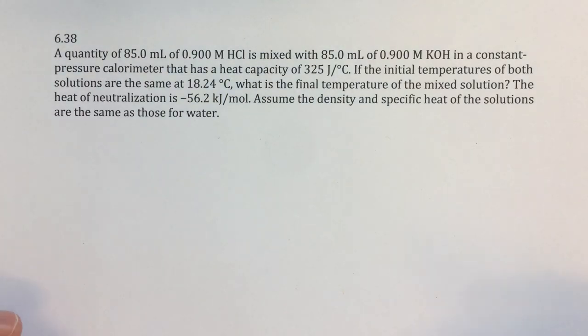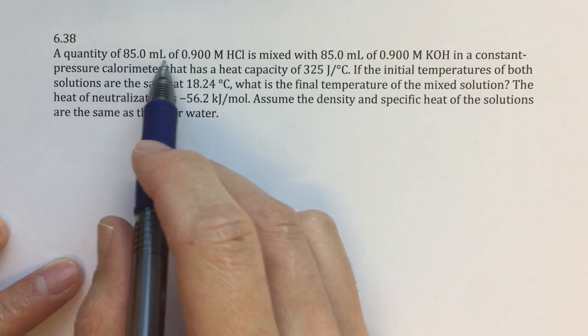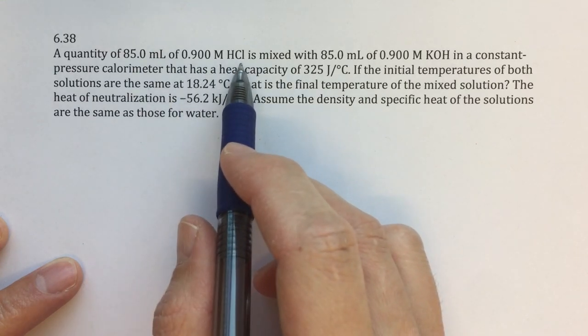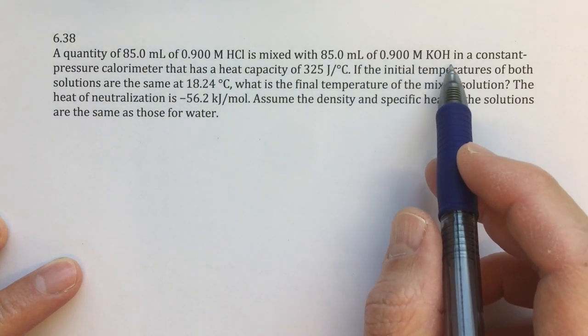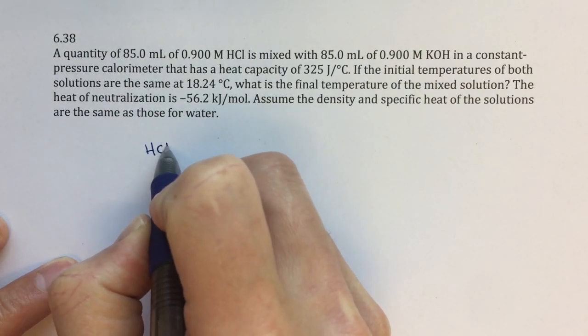The first thing that I'm going to do is I'm going to try to organize the information that's given. So 85 milliliters of 0.9 molar HCl is mixed with 85 milliliters of 0.9 molar KOH.